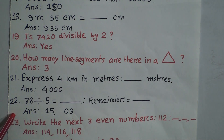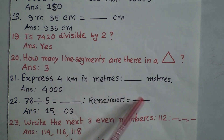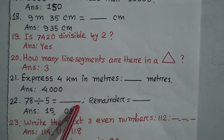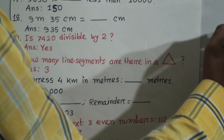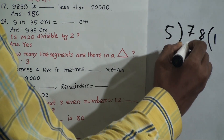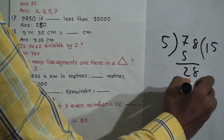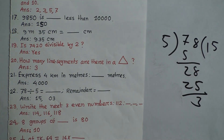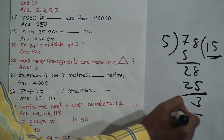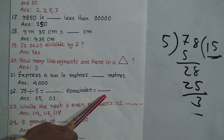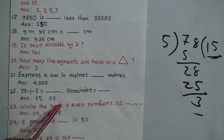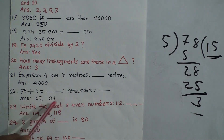Question 22: 78 ÷ 5 equals dash, remainder dash. Divide 78 by 5: 5 × 1 = 5, remainder 28; 5 × 5 = 25, remainder 3. So the quotient is 15 and the remainder is 3.